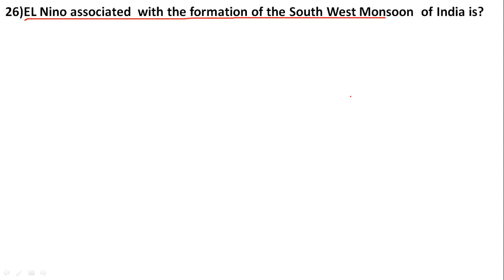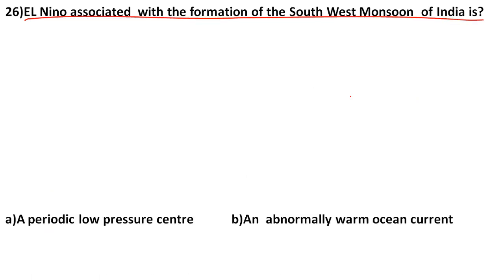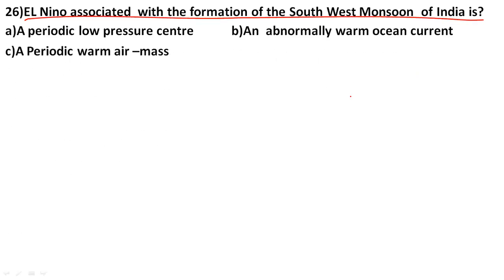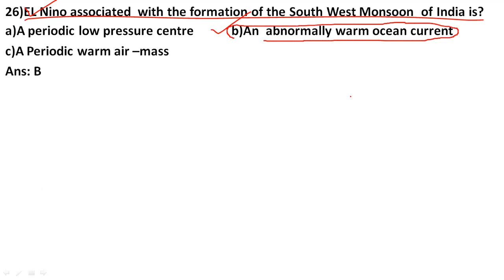El Nino is associated with the formation of the southwest monsoon of India. What is El Nino? The correct answer is B: an abnormally warm ocean current. An abnormally warm ocean current in the Pacific Ocean — this warm current is what we call El Nino.